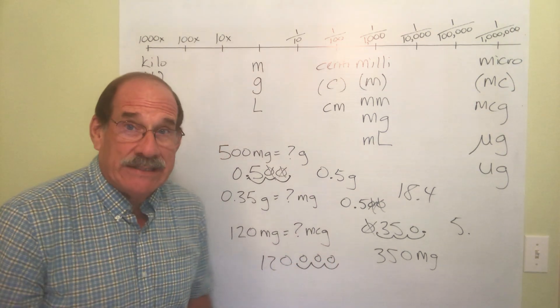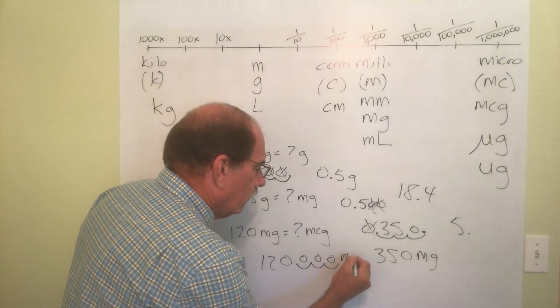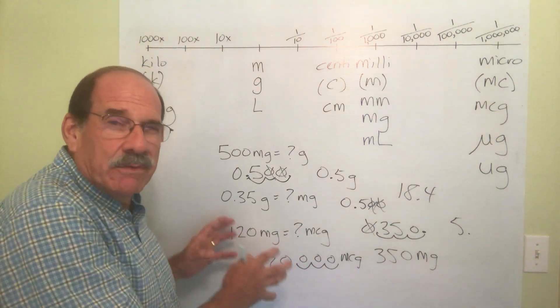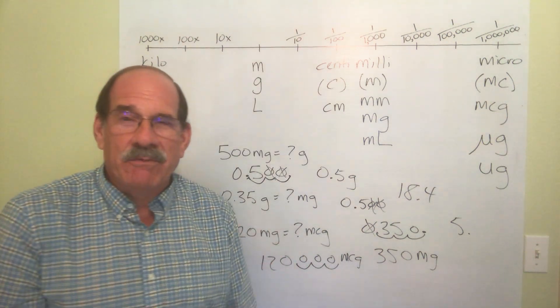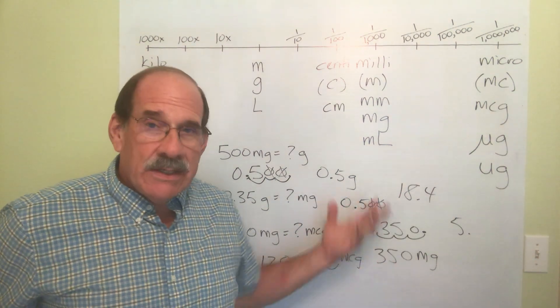So I move it three to the right. That means I go one, two, three jumps. I put zeros in there to take up the space. That's a hundred twenty thousand micrograms. And again, you'll probably never use numbers like that in the medical field, but know how to do this.